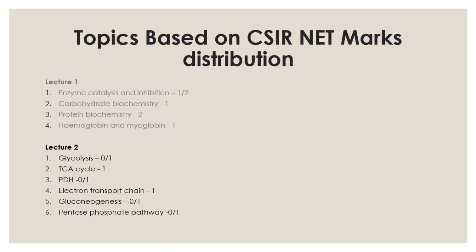All these topics relate to carbohydrate metabolism, which is the most important metabolism. Although protein and lipid metabolism are in the syllabus, they will be covered less. We will also discuss glycogen metabolism — the regulation of glycogen-glucose interconversion and the role of hormones like insulin and epinephrine. The numbers after each topic name indicate the approximate number of CSIR NET questions expected from that subtopic.